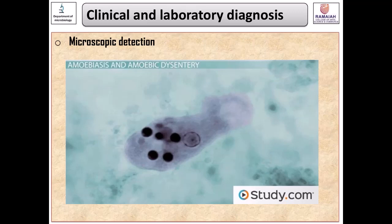For diagnosis of Entamoeba histolytica, several methods are available. One is microscopic detection, where trophozoites or cystic forms from stool samples are examined under the microscope after staining with chromogenic substrates like trichrome stain using a wet mount preparation. Microscopy has low sensitivity if only one stool sample is analyzed, and requires personnel trained in morphological diagnosis; without this, microscopic detection becomes less sensitive.